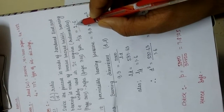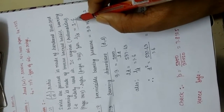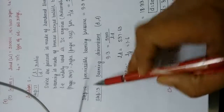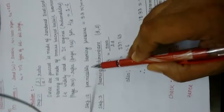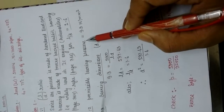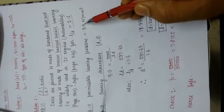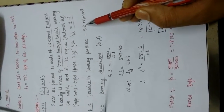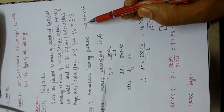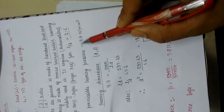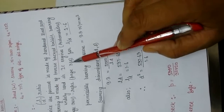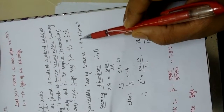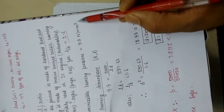Step 2 is permissible bearing pressure. From the same page number 366 of the design data book, the permissible bearing pressure is equal to 9.3 Newton per mm square.